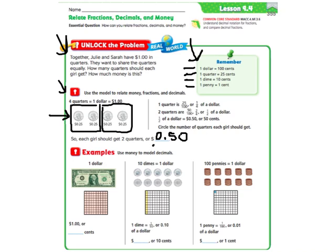They gave us a little bit of extra information over here that one quarter is like writing 25 over 100 because it's 25 cents out of 100 cents that makes a dollar. Or it's one-fourth of a dollar because you need four of them to make a dollar. Two quarters would be 50 over 100 or two-fourths or one-half of a dollar.